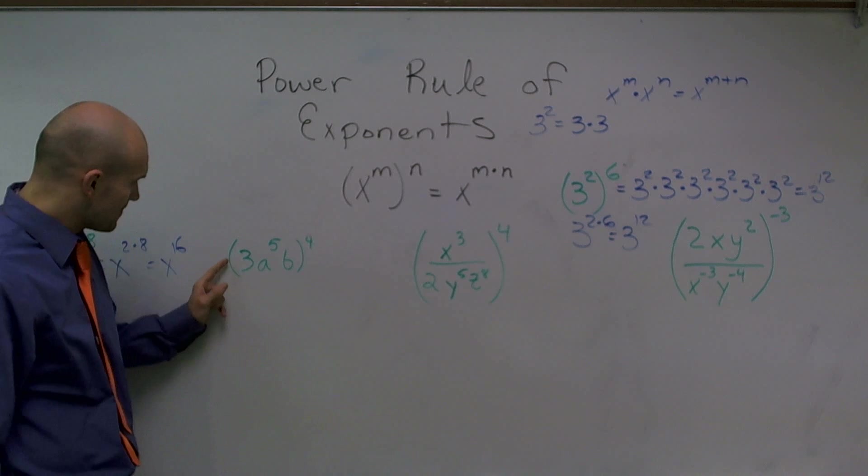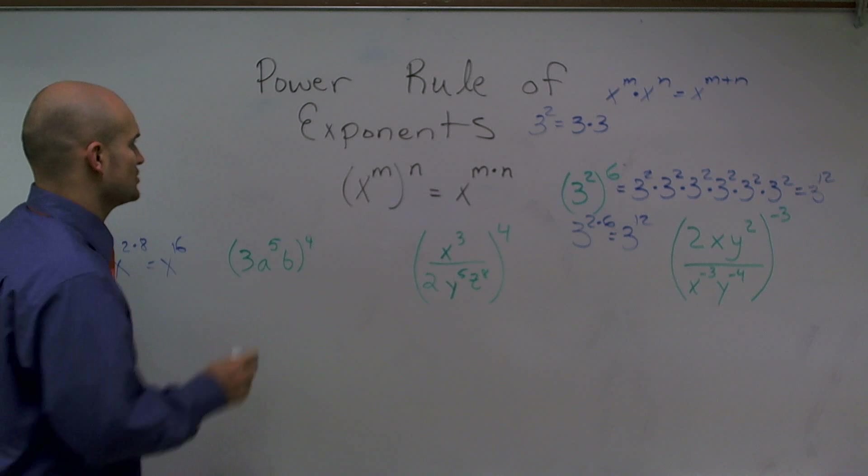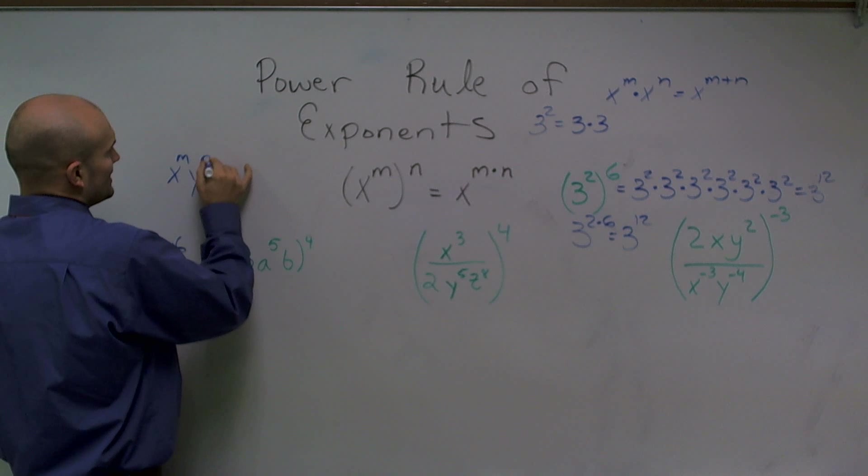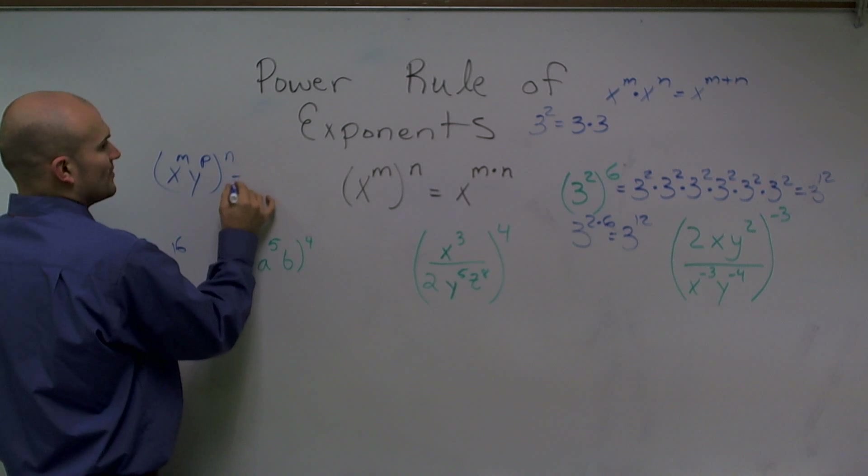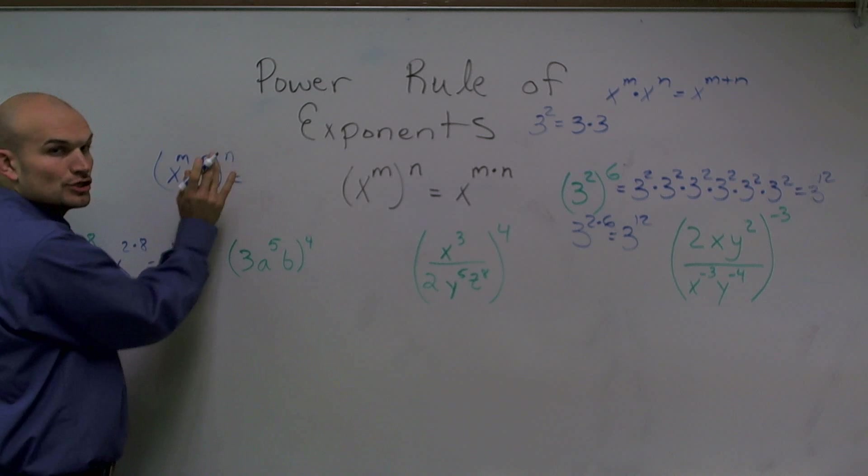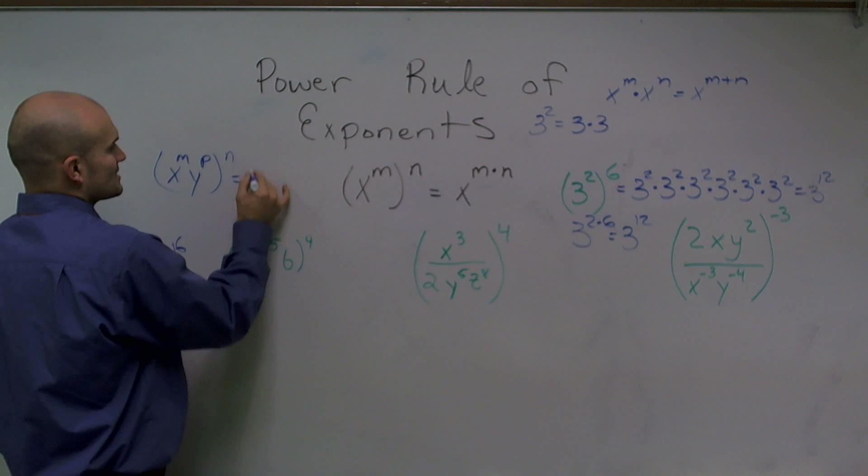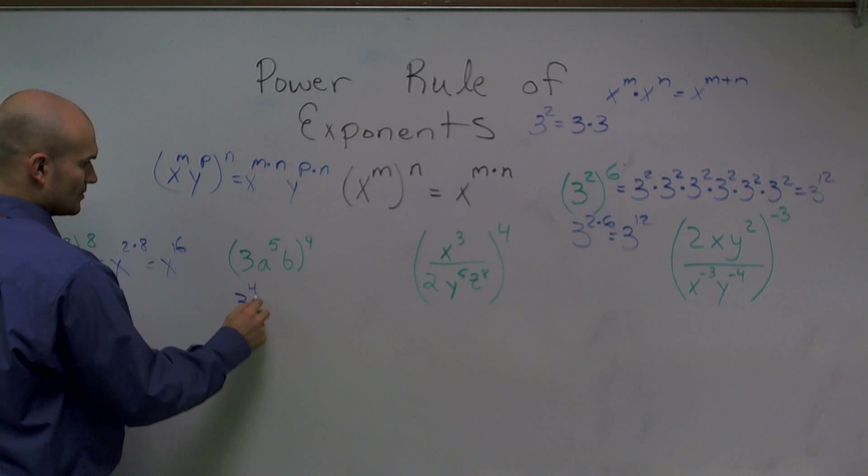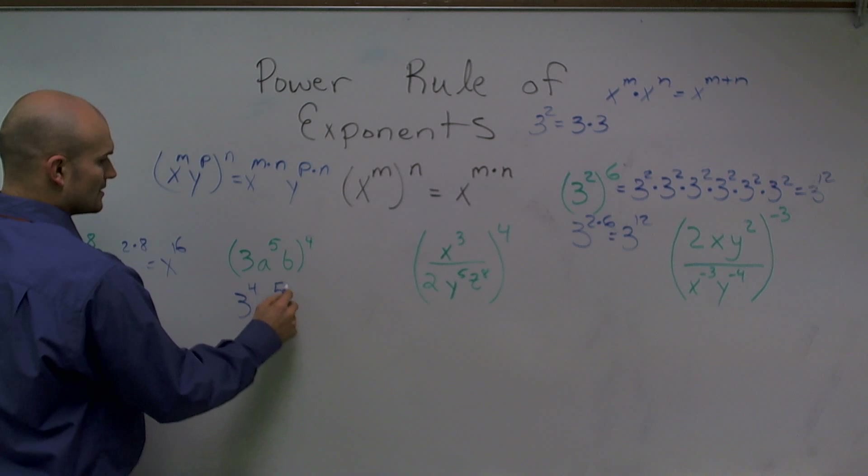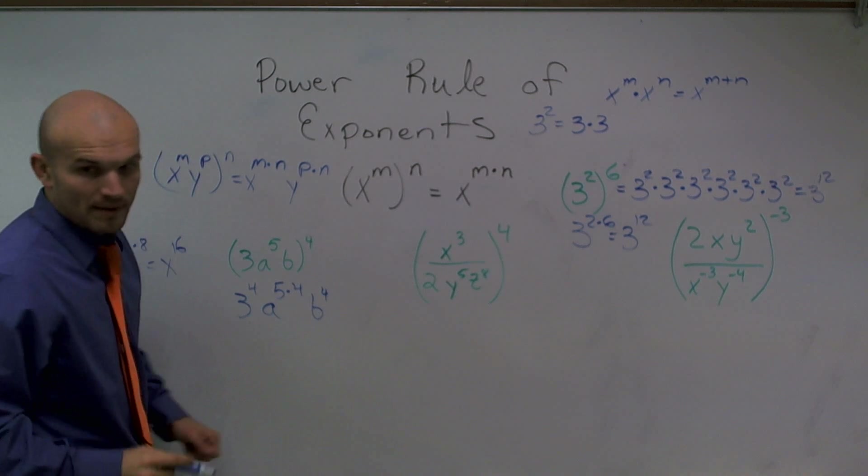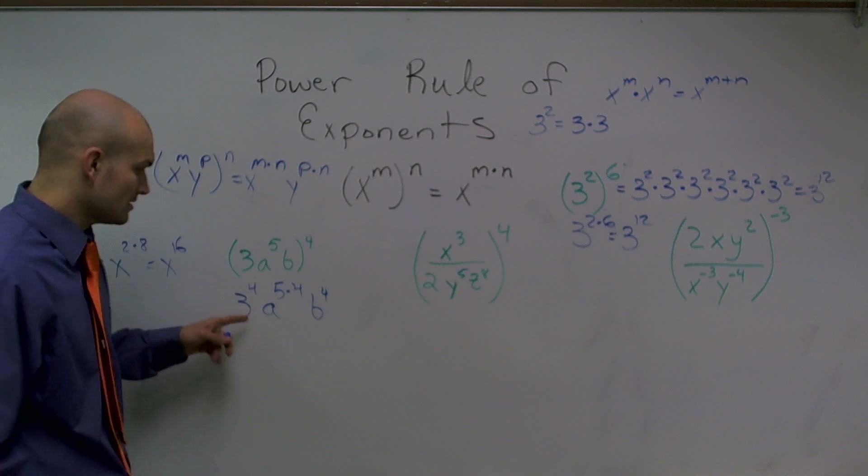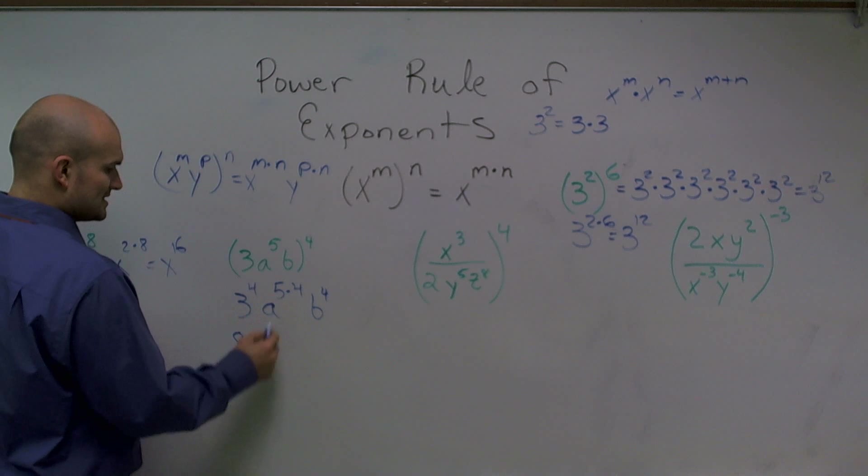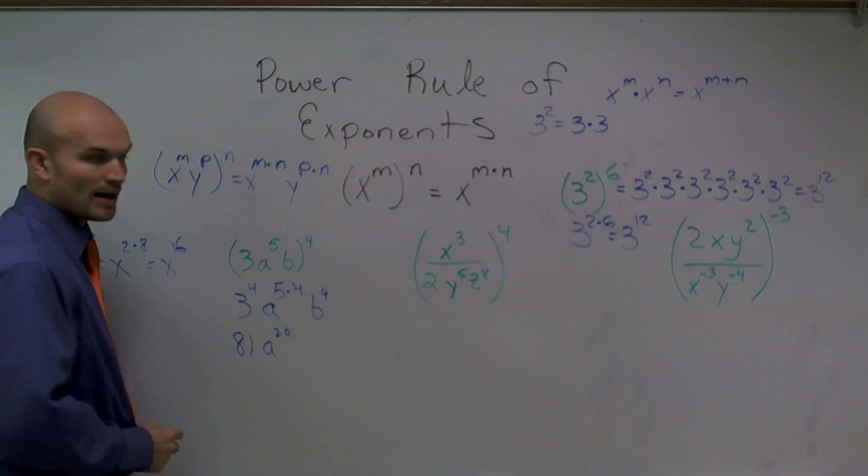Now here, I have 3 times a to the 5th times b to the 4th. One thing we need to make sure that we remember is that with the power rule, if you have x to the m, y to the p raised to the n, that means this n goes to both of these exponents. So you've got to make sure you distribute your exponent to both of your terms. So that would be x to the m times n and y to the p times n. Therefore, I need to say 3 to the 4th power times a to the 5 times 4 and b to the 4th power. So therefore, 3 to the 3rd power, 3 times 3 is 9 times 3 is 27 times 3 is going to be 81. Then a to the 5 times 4 is a to the 20th power and then b to the 4th.